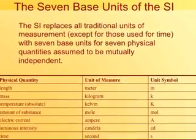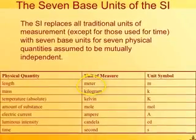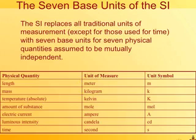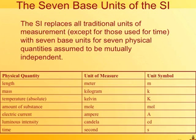The meter is a little bit longer than a yard, for those who don't know what a meter is. For mass — how much stuff something has, how massive it is — the base unit is the kilogram. If you buy a kilogram of sugar, that's about 2.2 pounds of sugar in the US system.